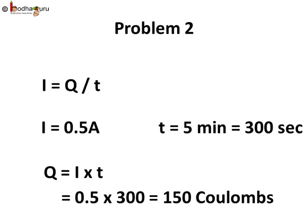We know 1 coulomb is equal to charge in 6 into 10 to the power 18 electrons. So that many electrons multiplied by 150 are the number of electrons flowing through it. This generates the heat and the bulb glows due to the heat.